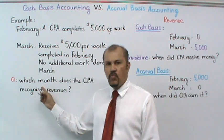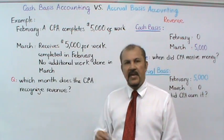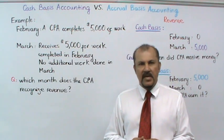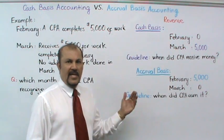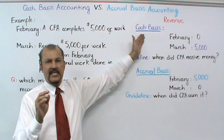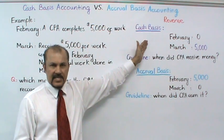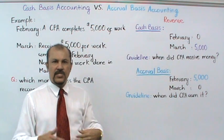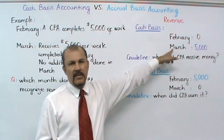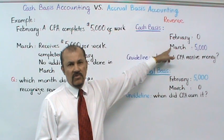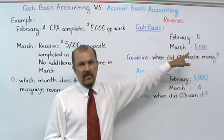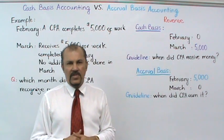The question then is: which month does the CPA recognize revenues? To answer that, let's assume the CPA maintains his books on a cash basis. If the CPA maintains his books on a cash basis, then in the month of February he records absolutely no revenues — zero revenues. But in the month of March, he records $5,000 worth of revenues.